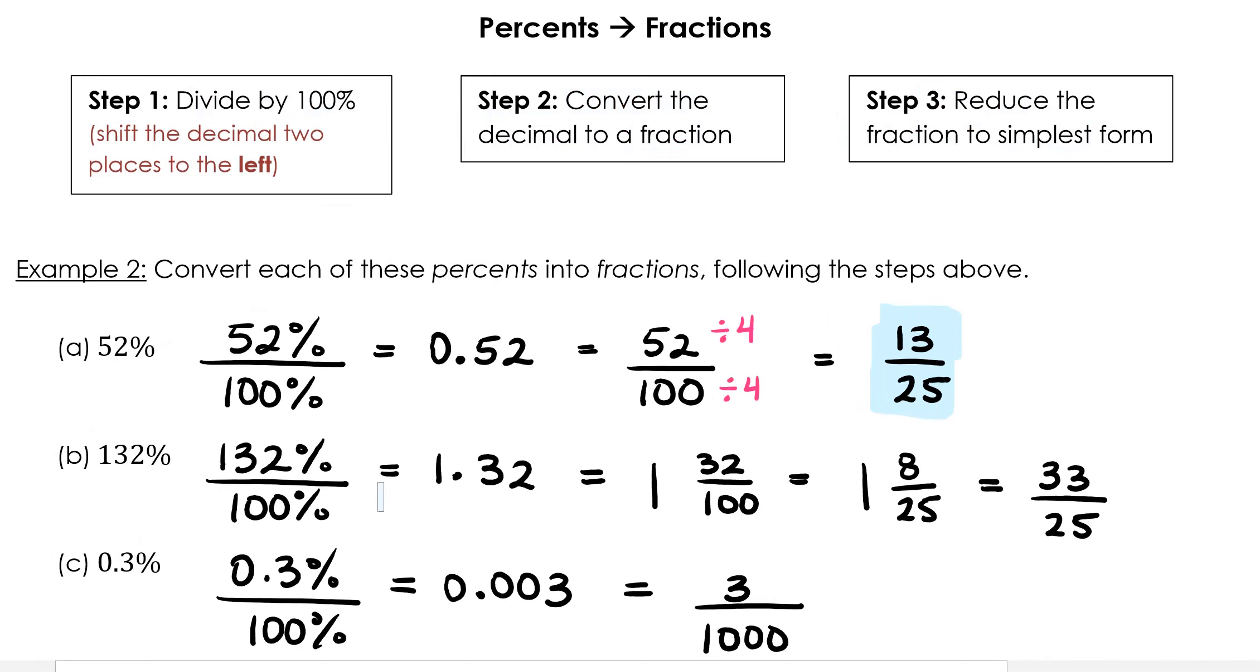Please pause the video here while you try B and C. 132% divided by 100% gives us 1.32, which can be expressed as 1 whole and 32 hundredths, which we can convert into an improper fraction as 33 over 25. 0.3% divided by 100% gives us 0.003, which can be expressed as 3 thousandths.